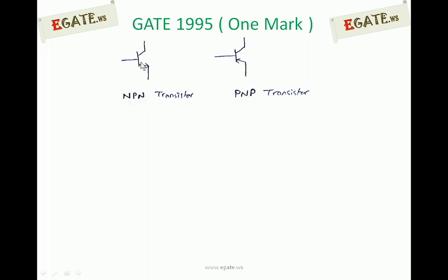Always arrow implies emitter, opposite of that is collector terminal and this side is the base terminal. So this is NPN and PNP transistor. Whatever the transistor, whether NPN or PNP, it can be configured in three cases.